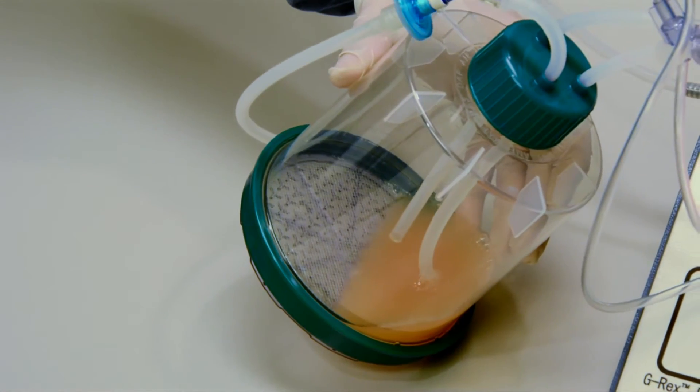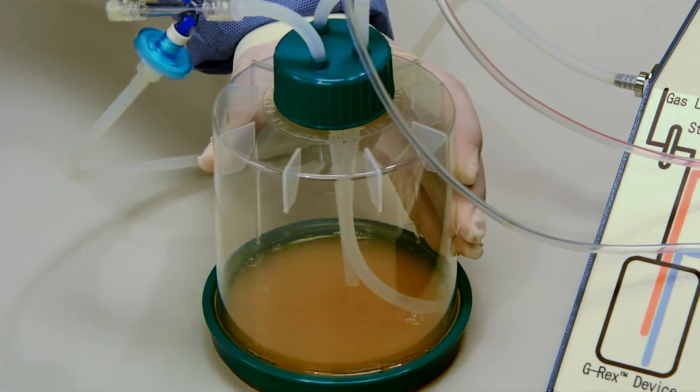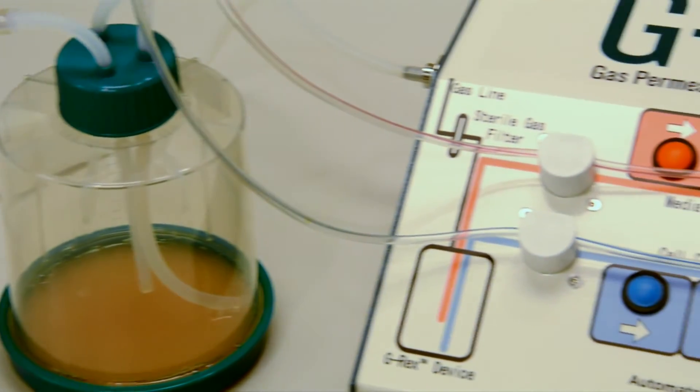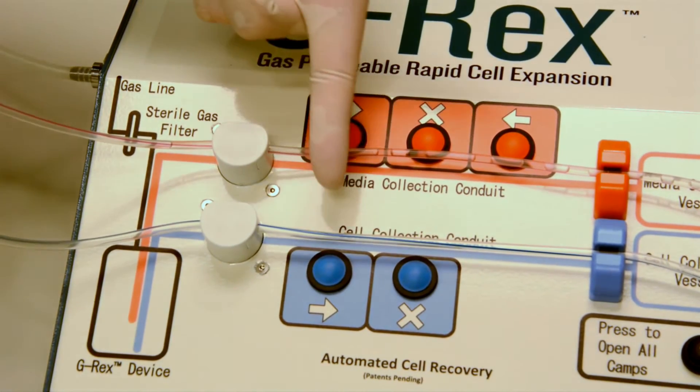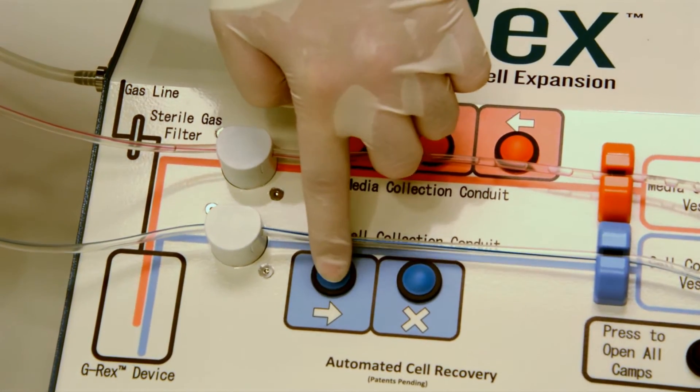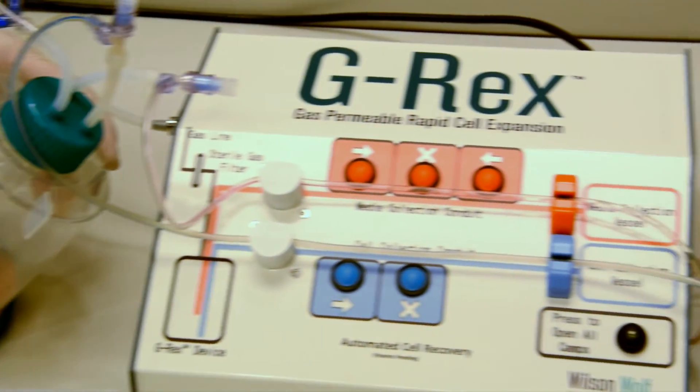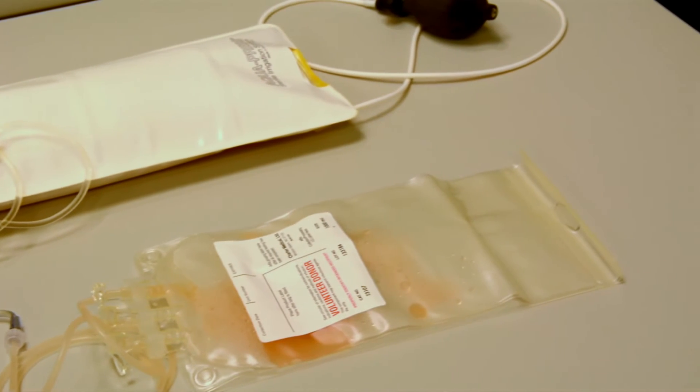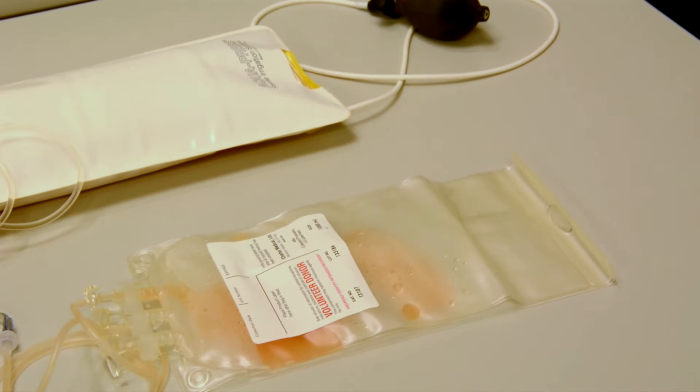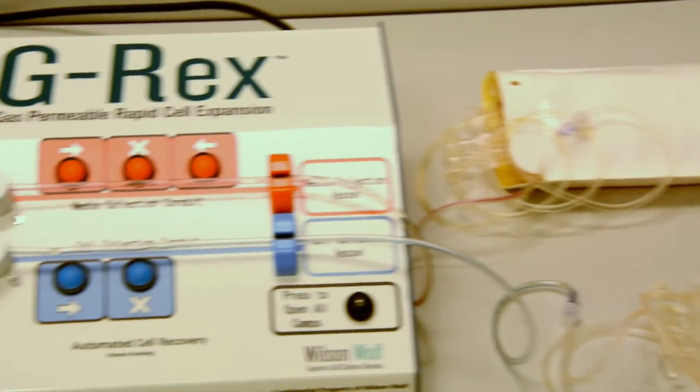After resuspending the cells, we are ready to initiate the harvesting process. By pressing the cell collection button, we allow the cells in suspension to be drawn through the cell collection line. The cells are then drained into the collection bag here, and this process stops automatically when the cell line optical detector senses air and clamps the line.